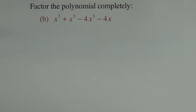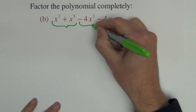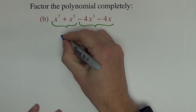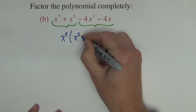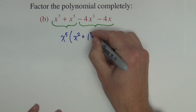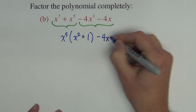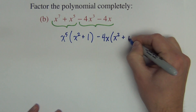One more problem. Again, we're asked to factor the polynomial completely. It's another four-term polynomial, so it's pretty likely that grouping will appear on your test. I group pairs of terms and look for common factors. I can take an x to the fifth out of the first two, leaving x squared plus 1. Out of the next two, we take out a negative 4x, leaving x squared plus 1.